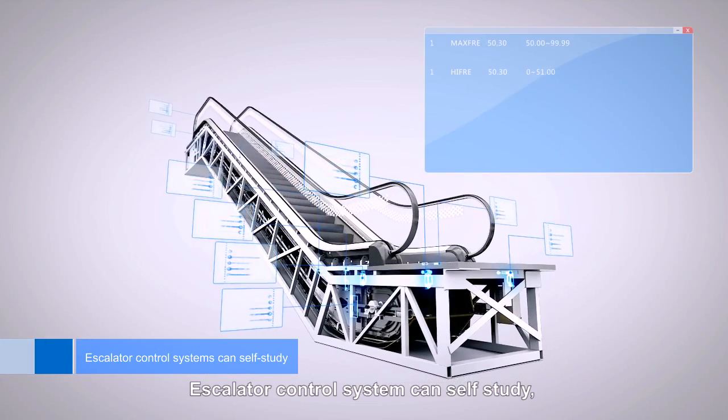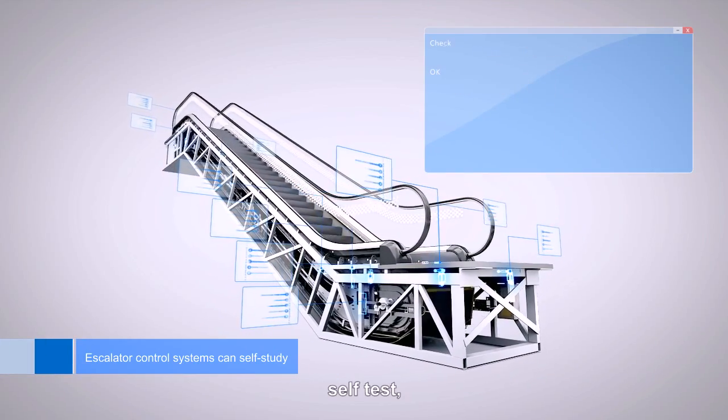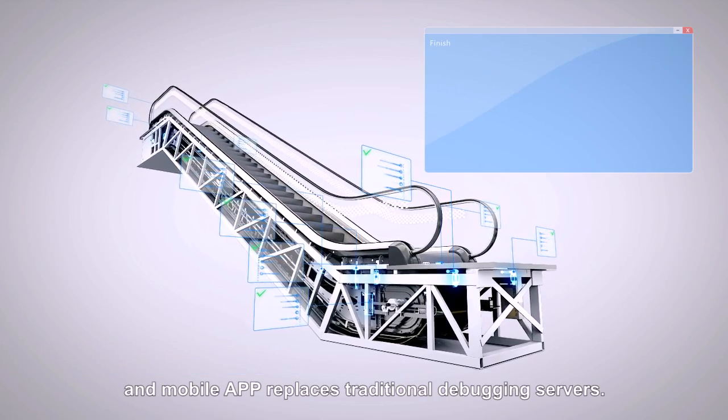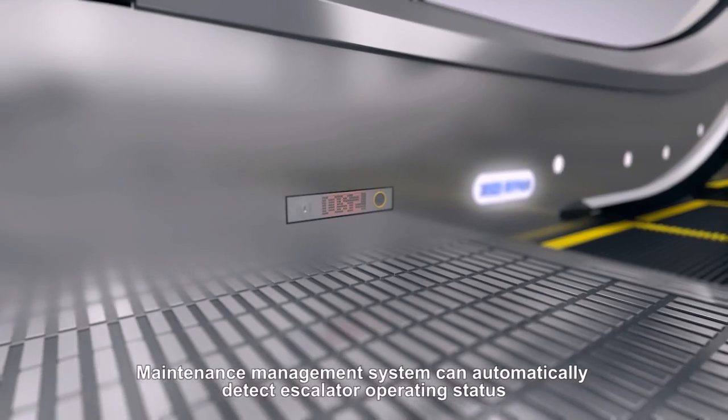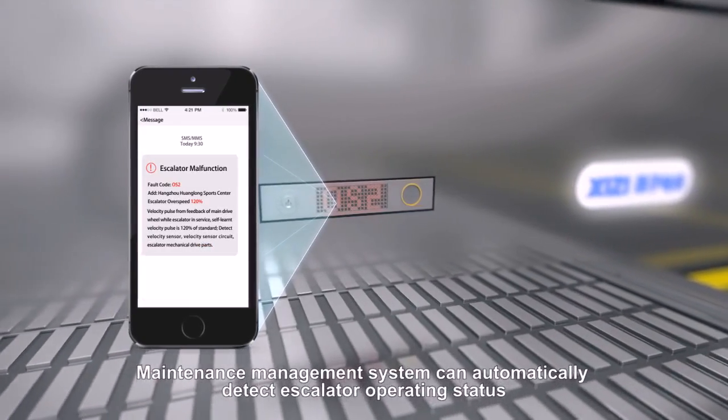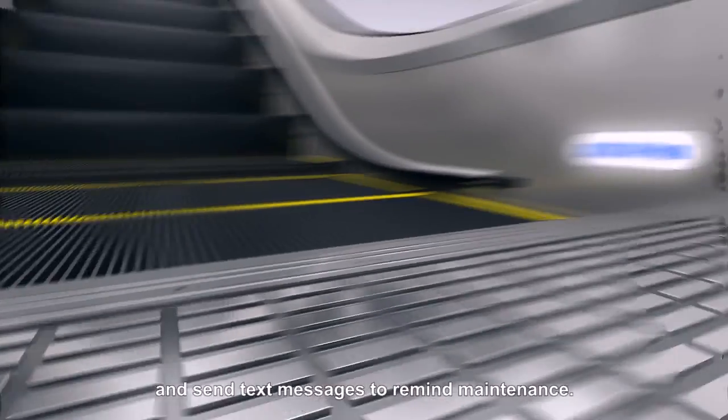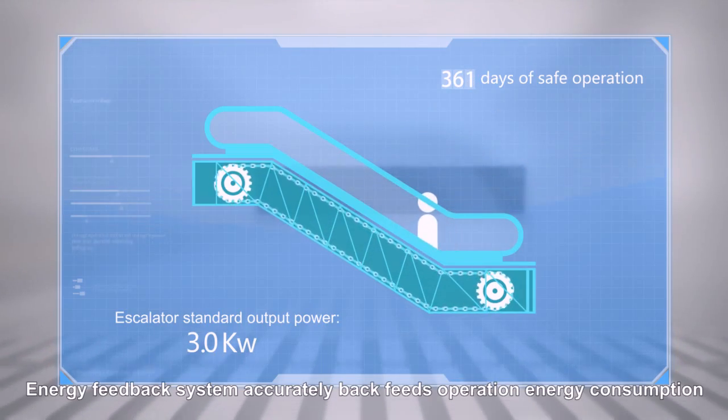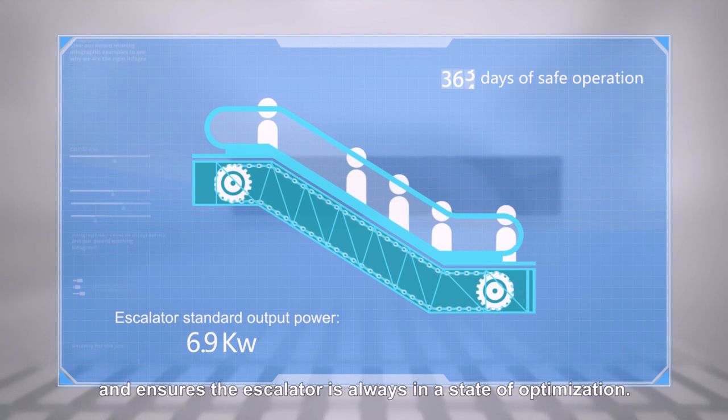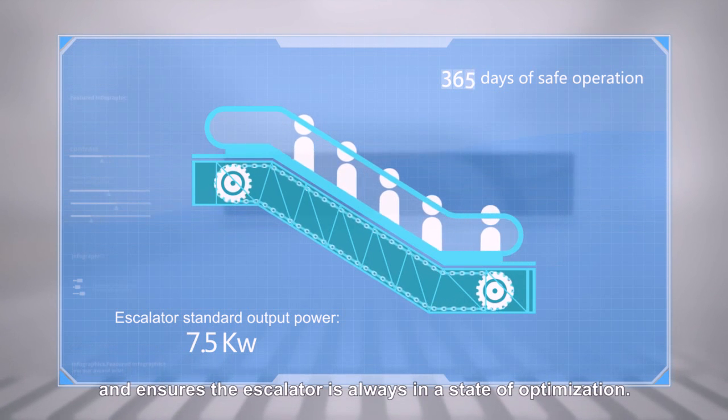Escalator control system can self-study, self-test, and mobile app replaces traditional debugging servers. Maintenance management system can automatically detect escalator operating status and send text messages to remind maintenance. Energy feedback system accurately back feeds operation energy consumption and ensures the escalator is always in a state of optimization.